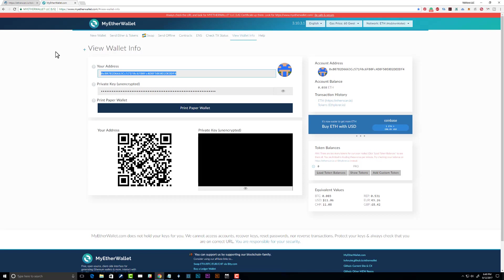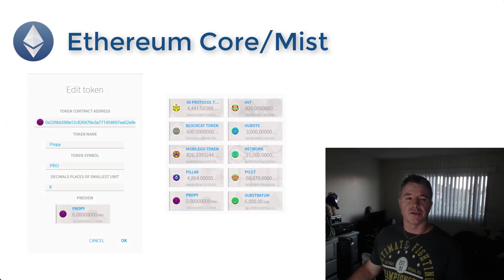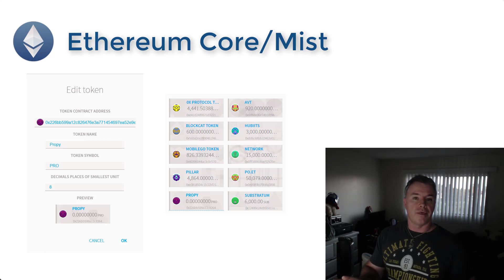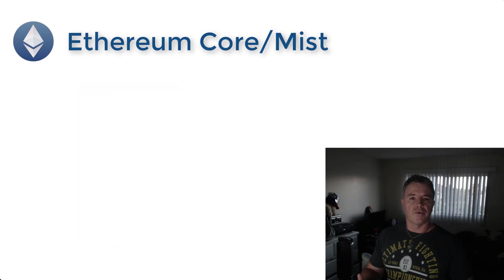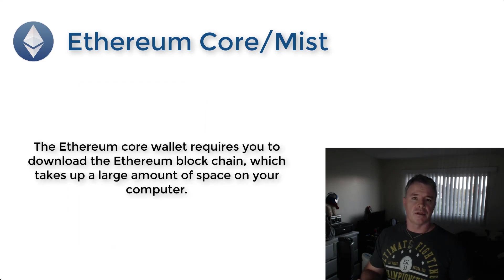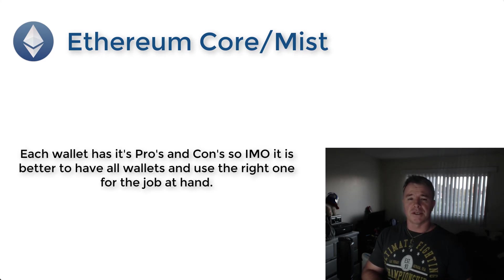Now I'll show you how to add a custom token to the Ethereum Core Wallet with the Mist browser. I use the Ethereum Core Wallet for displaying all my tokens - I think it's the best wallet for that. It also aggregates tokens across multiple Ethereum addresses and gives you a total. The downside is you need to download the entire chain, so you need available disk space.